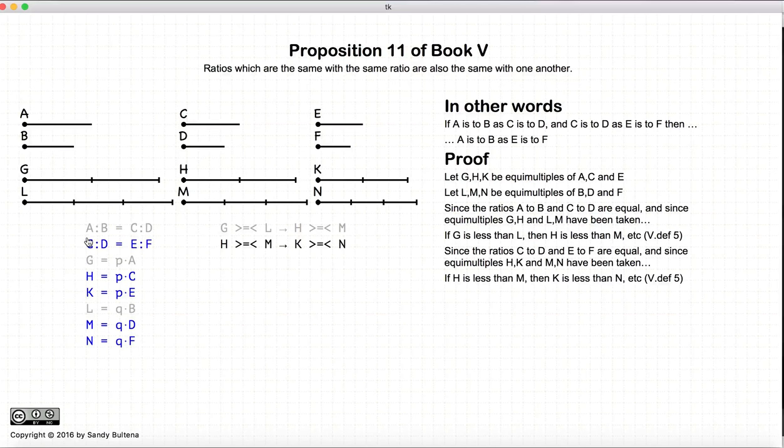Similarly, we have that c to d is equal to e to f. By definition of what that means, we have if h is greater than m, that implies that k is greater than n, equals less than, equals and less than, and so forth. All by definition number five.